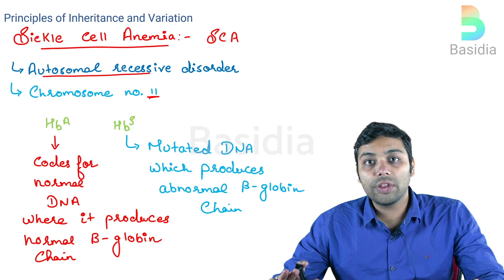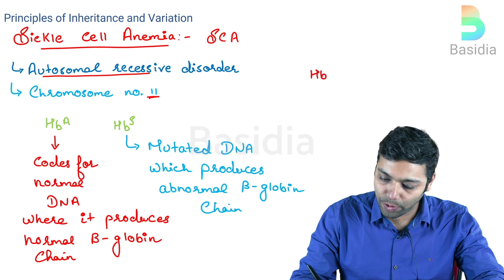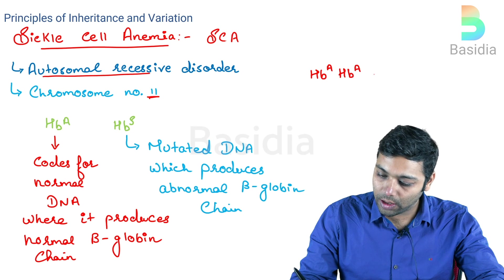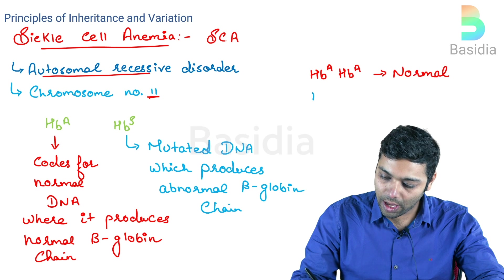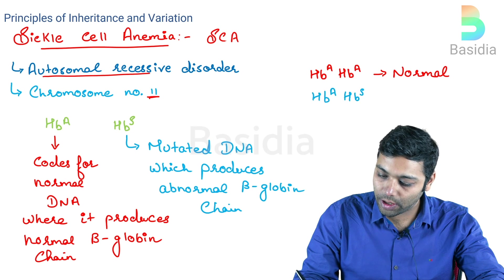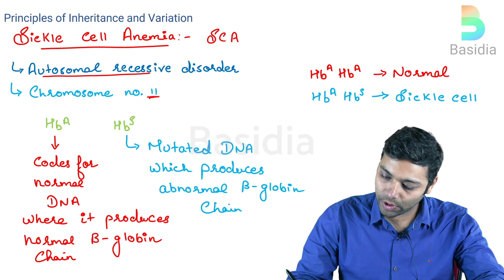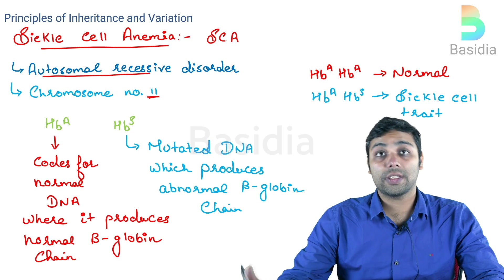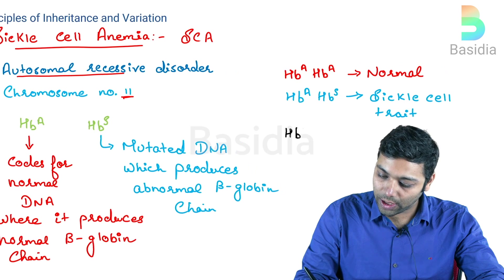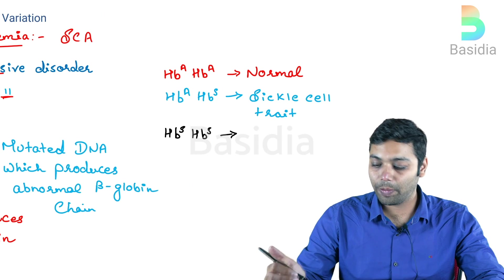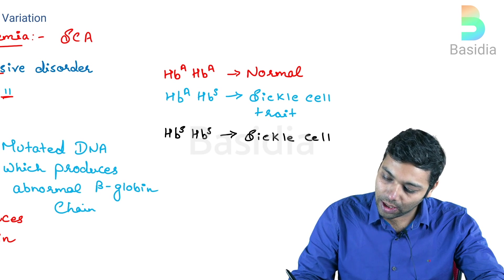There are basically three forms of alleles present here. HbA/HbA codes for a normal individual. HbA/HbS codes for sickle cell trait, which is actually an incompletely dominant form. And the most dangerous or lethal form is HbS/HbS, the completely recessive form which codes for sickle cell anemia.